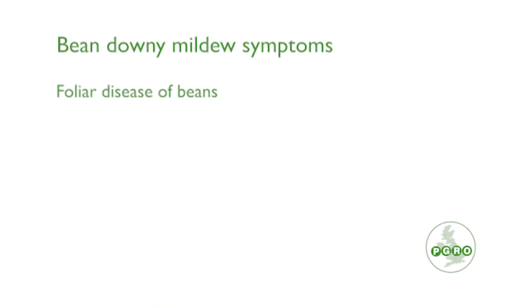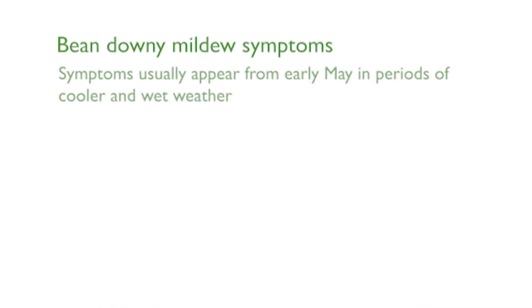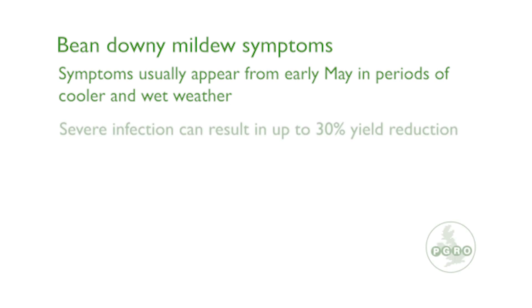Downy mildew is a foliar disease of beans. It is characterized by pale lesions on the upper side of the leaves, which are covered in gray mycelium on the underside of leaves. Spring beans are more likely to be impacted by downy mildew than winter beans. Symptoms usually appear from early May in periods of cooler and wet weather.